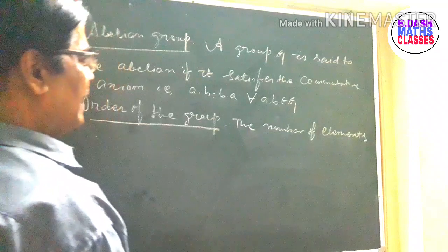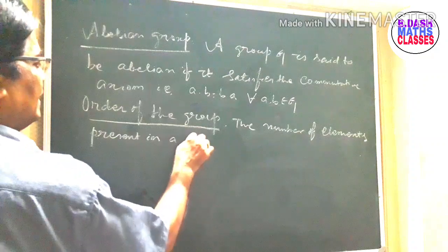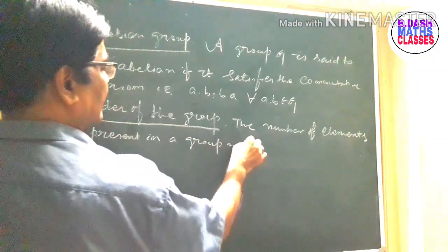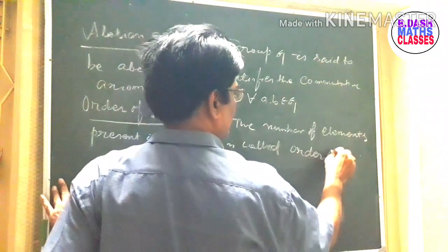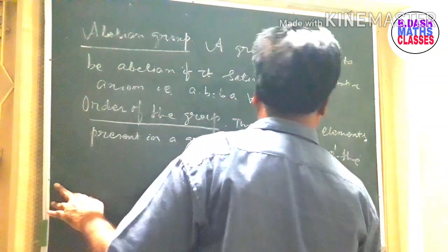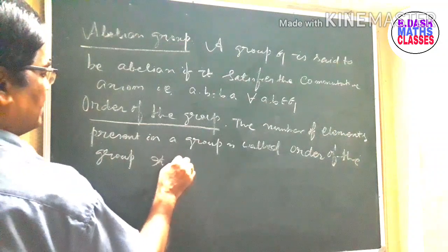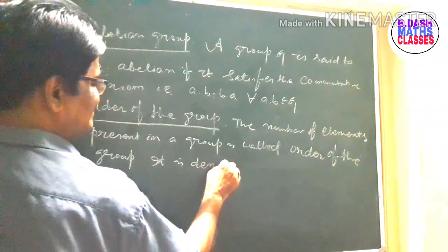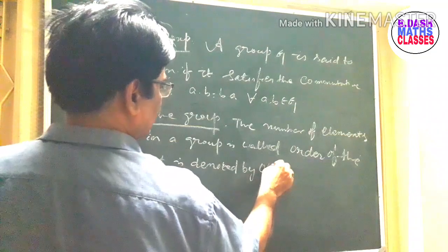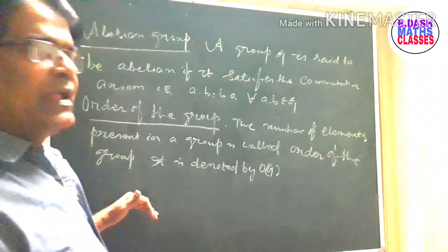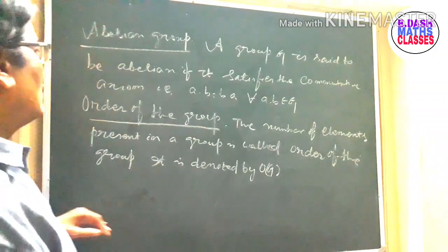Next, order of the group. The number of elements present in a group is called the order of the group.